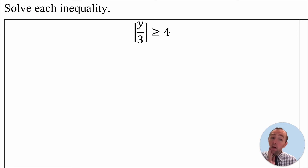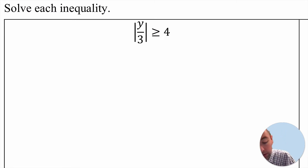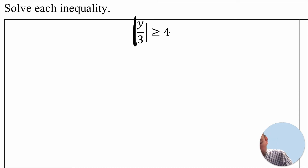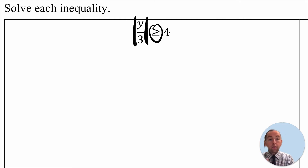Always isolate an absolute value when you're trying to solve an equation or inequality. We do have the absolute value isolated on the left-hand side here. So if the absolute value of y over 3 is going to be greater than or equal to 4, the distance of y over 3 from 0 must be at least 4.